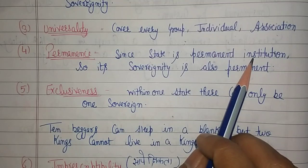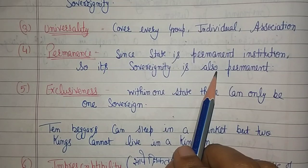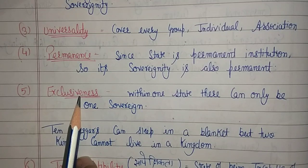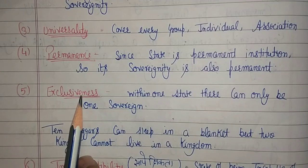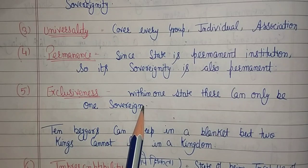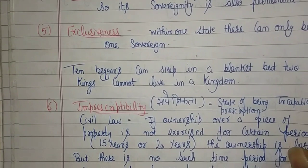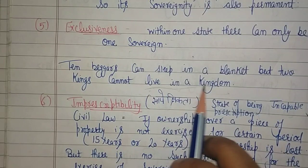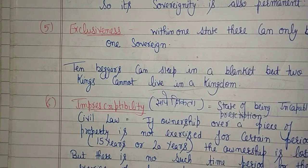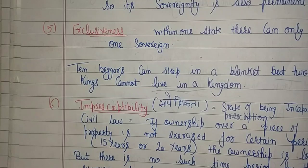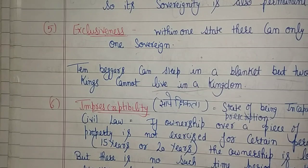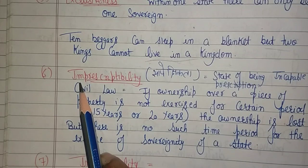फिर है exclusive — exclusive मतलब supreme power मेरे पास ही है। Look at the history of one family — two brothers, sometimes father and son have fought to become king — so how can two kings live in a particular place? Two kings cannot live in a kingdom, so this can't be possible। After that, one more feature — imprescriptibility।